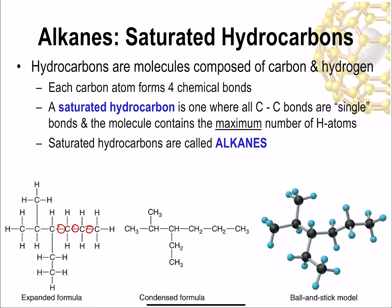For example, if I circle this carbon atom down here, it's got one, two, three, four bonds around it — so that carbon atom has the four bonds that we mentioned. More often than drawing expanded formulas, we'll draw condensed formulas. In the condensed formula, instead of showing the individual hydrogen atoms, we'll group them together. So if a carbon has three hydrogens attached, we'll write CH₃. If it has one hydrogen attached, we'll write CH.